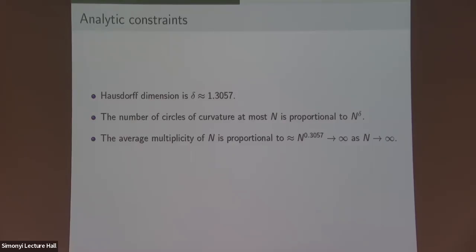This says that the average multiplicity of a curvature in my picture goes to infinity. The natural question is: therefore maybe at some point every curvature actually appears? Because the average multiplicity goes to infinity, it would be reasonable that the individual multiplicities might also go to infinity — at least that's a reasonable guess. This suggests that every large enough curvature could appear, though this is just from the analytic approach without any algebraic considerations.